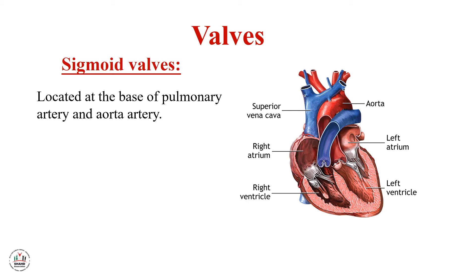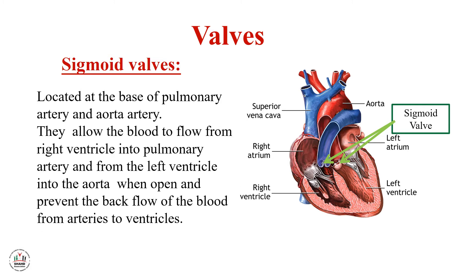The semilunar (sigmoid) valves are located at the base of the pulmonary artery and the aorta. They allow blood to flow from the right ventricle into the pulmonary artery, and from the left ventricle into the aorta when open. They prevent the backflow of blood from the arteries to the ventricles when closed.